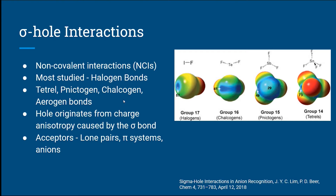They're called sigma-hole interactions because of these blue maxima regions on these ESPs — they are regions of positive charge caused by an anisotropic charge distribution, which is caused by covalent bonding to an electron-withdrawing constituent. These can form attractive interactions with lone-pair-containing atoms, pi systems, or anions.